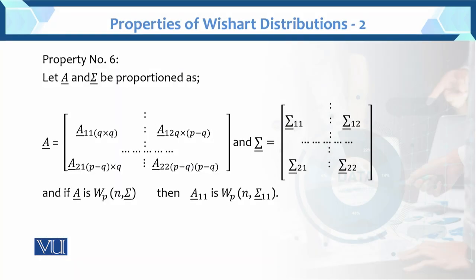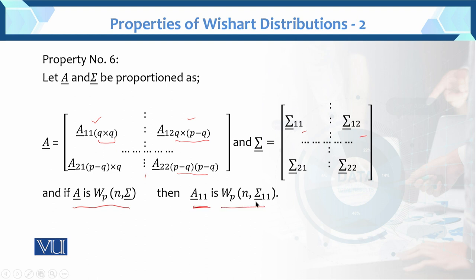This is the last property of the Wishart distribution. The property is: let A and Σ be partitioned. A is divided into different portions — A₁₁ of order q×q, A₁₂ of order q×(p−q), A₂₁ of order (p−q)×q, and A₂₂ of order (p−q)×(p−q). Similarly Σ is partitioned into Σ₁₁, Σ₁₂, Σ₂₁, Σ₂₂. The property states: if A is Wishart, then A₁₁ is also Wishart with parameters N and Σ₁₁.